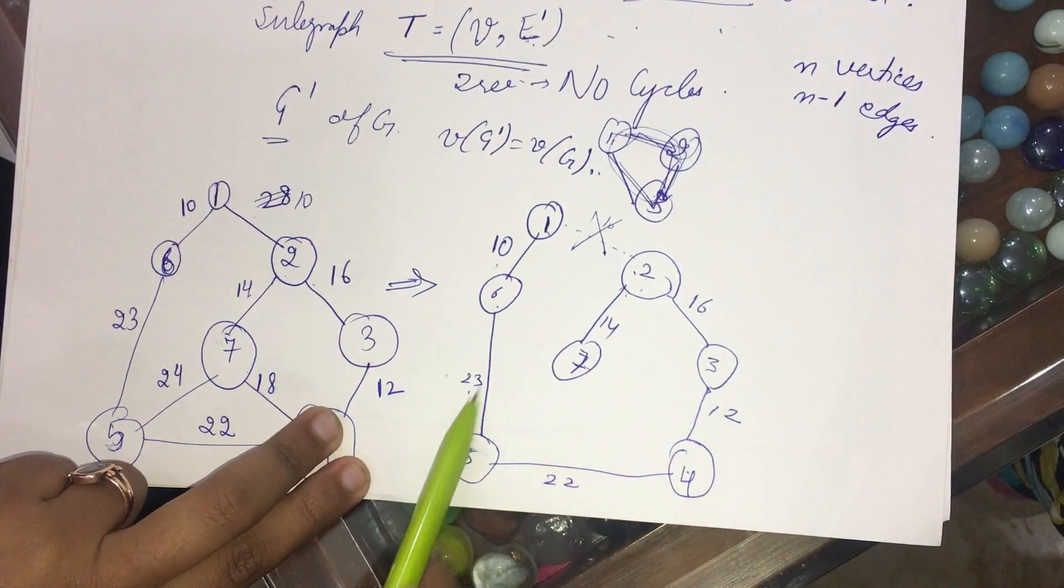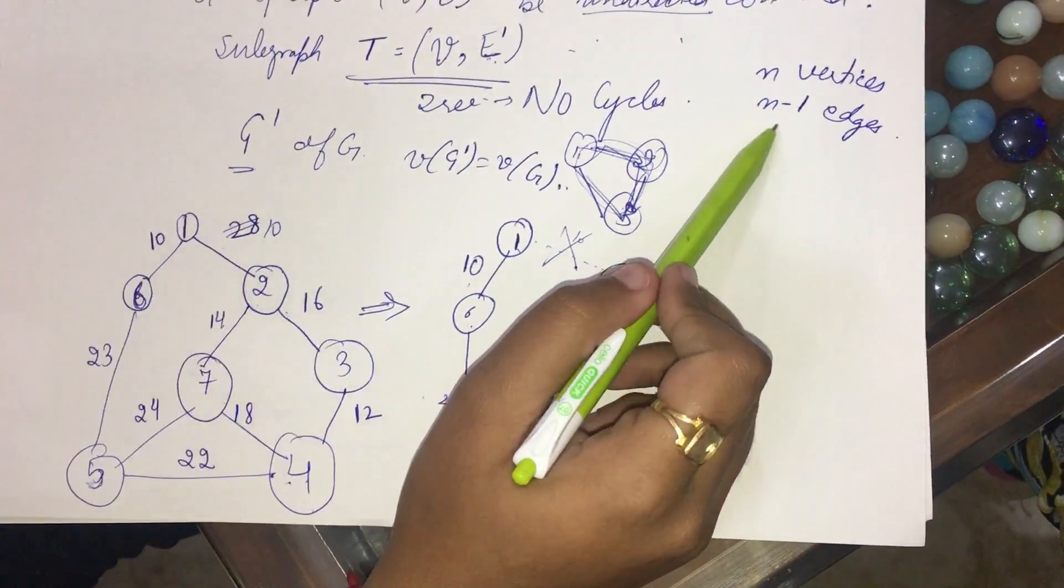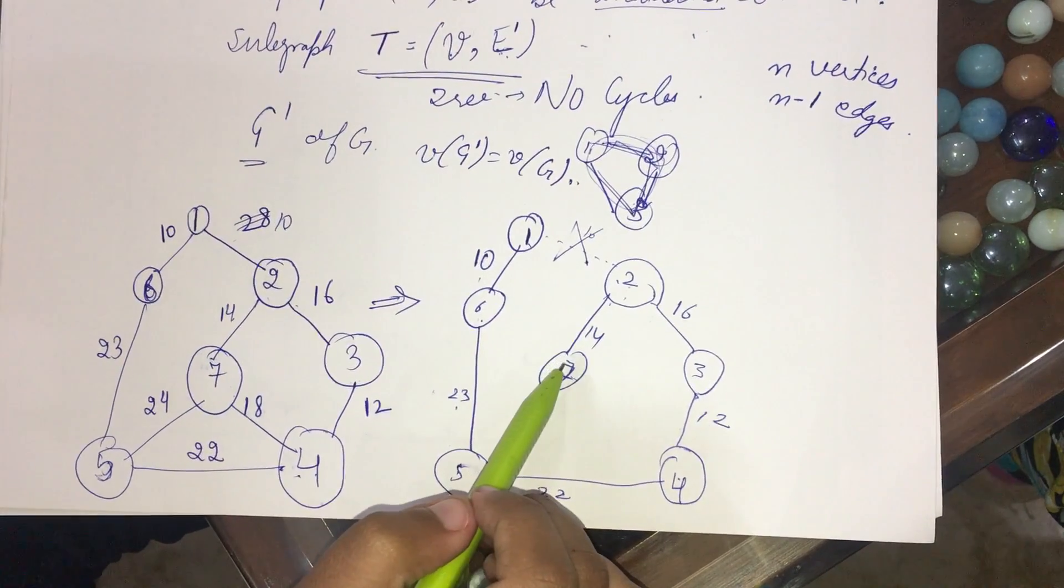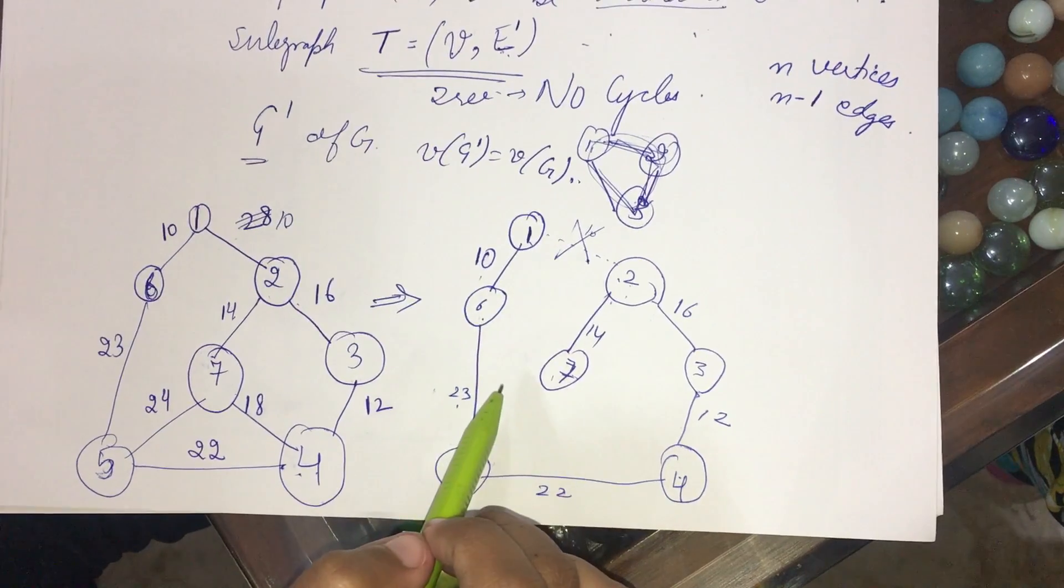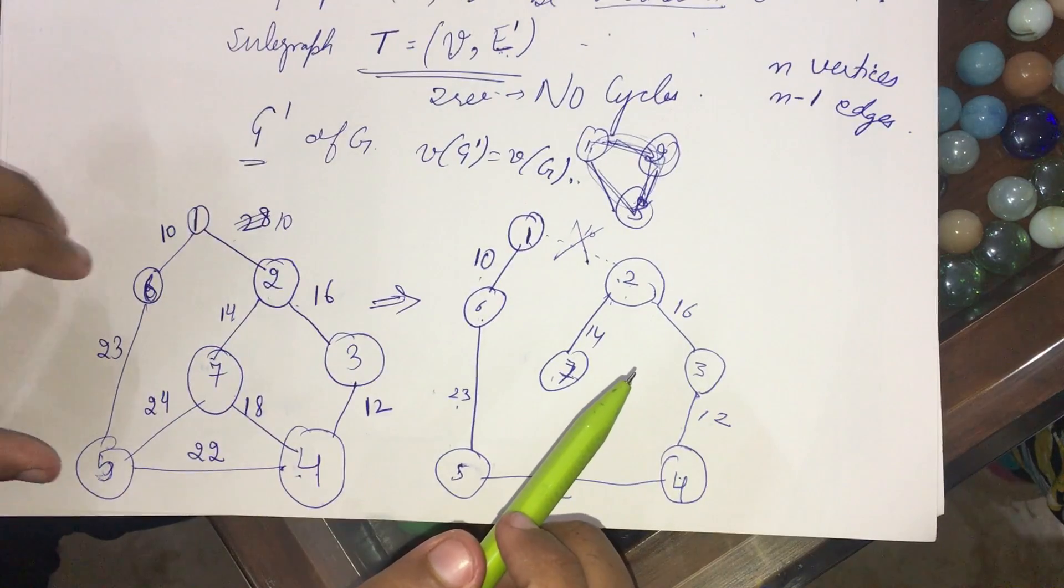N vertices and 1, 2, 3, 4, 5, 6, that is N minus 1 edges. So I have to stop when all my edges are included, and I have also to check at each step that there is no cycle. So this is how we form a spanning tree from a given graph.